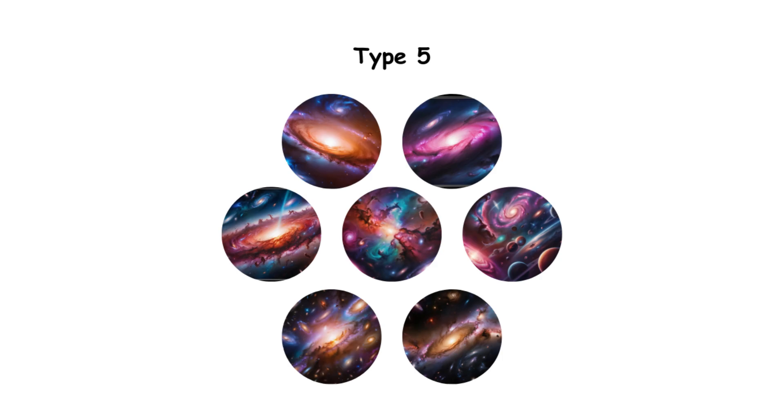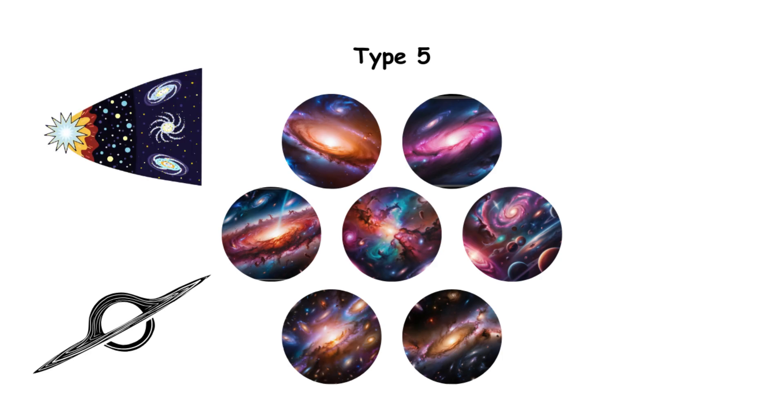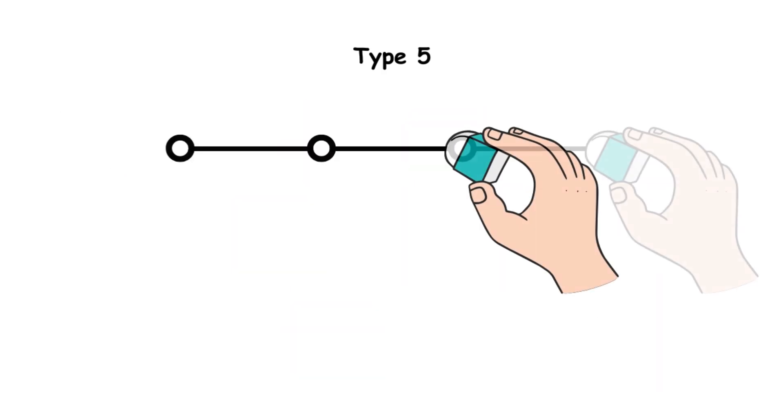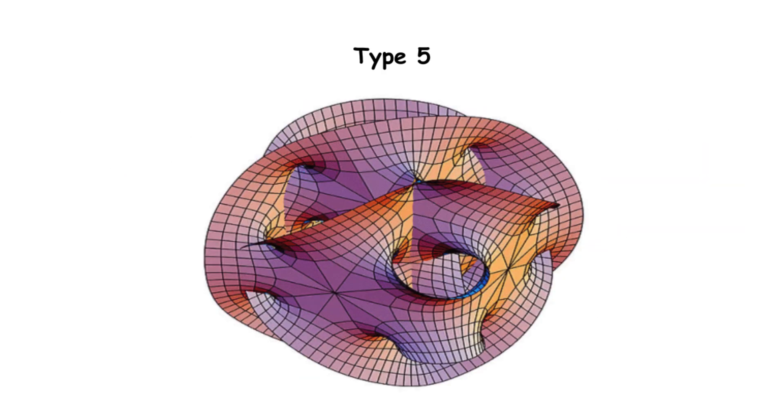A Type 5 civilization manipulates multiple universes. They create new big bangs, exploit white holes, and send messages backward in time. They could delete timelines, or reshape existence itself.